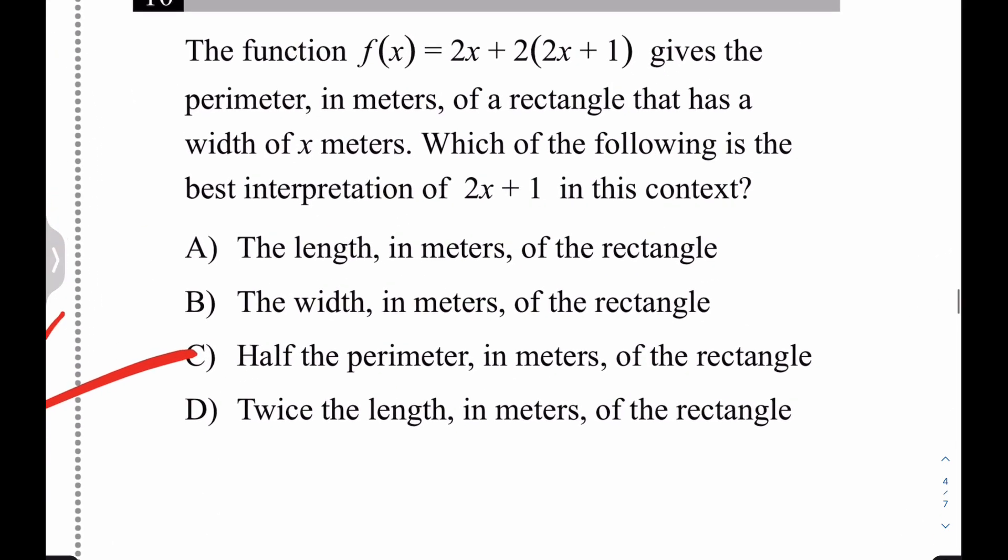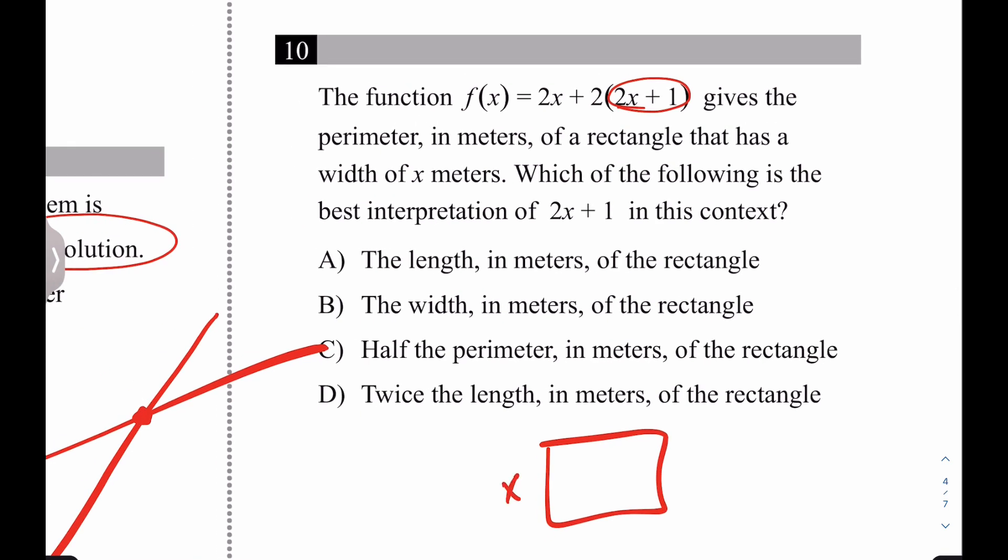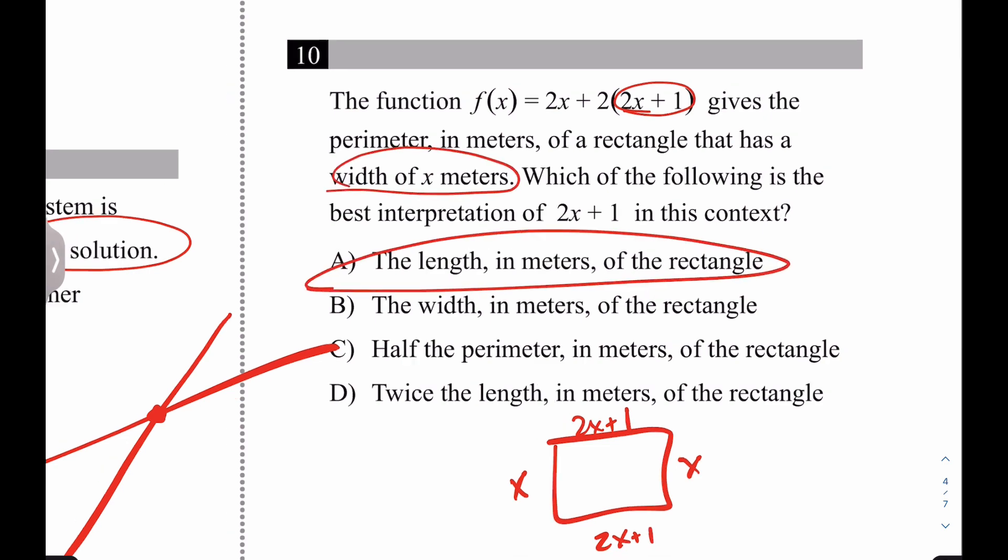All right. Let's keep flying. What about this one? It says, gives a perimeter in inches. All right. Which is the best interpretation of this? Well, think about what a perimeter is. It's x plus x, and then two of those. So 2x plus 1, and 2x plus 1. So if the width is x, it's got to be the length. Sweet. Let's keep going.